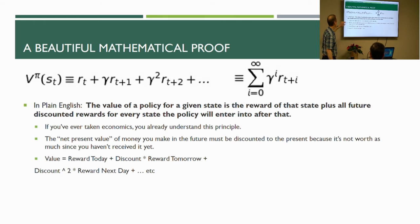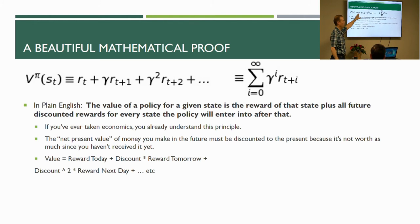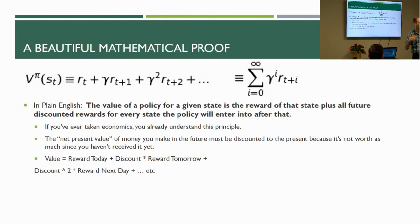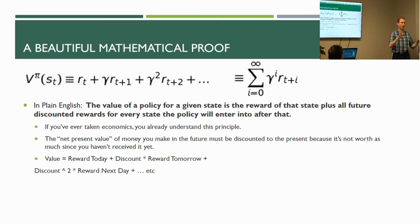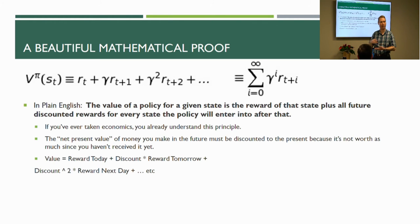The first equation: the value V of a given policy pi at state S at time T would be the reward at time T, plus a discount factor gamma applied to all future rewards. Notice that as you go further into the future, the discount factor gets squared, then cubed — exactly like economics and net present value, where you're discounting the future. That's how you get a higher utility if the policy is optimal and you're closer to the goal.